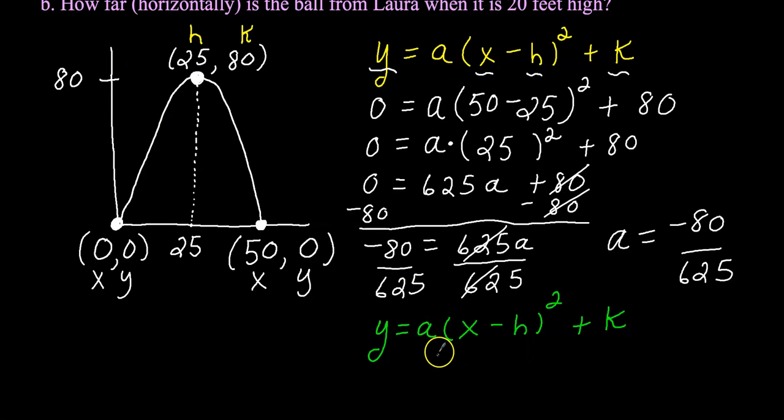And now I'm just going to substitute in for three things. I'm going to substitute in for A, H, and K. So it's going to be the following. Y equals, well, my A value is negative 80 over 625, times X, bring down your minus. And my H value is right here. It's 25 from right up here. Squared, bring that down, plus K, right here. The K value is 80. So I'll replace this K with 80. And that is the equation right there.